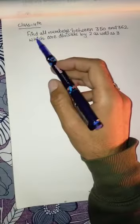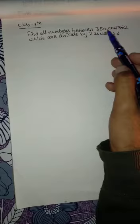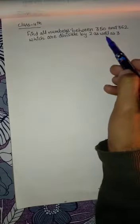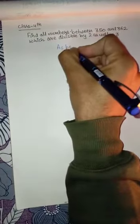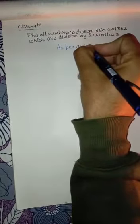In this example, we have to find all numbers between 350 and 362 which are divisible by 2 as well as 3. As per the divisibility rule of 2,